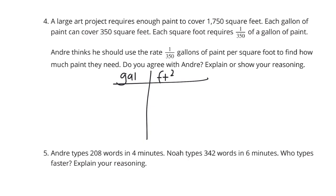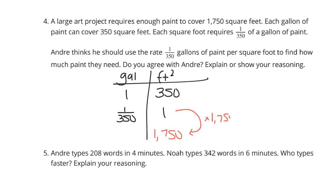Our two unit rates are: one gallon covers 350 square feet, and each square foot requires 1/350th of a gallon. We're trying to get to 1,750 square feet. Using the unit rate given — since we're given square feet — you'd take 1 and multiply by 1,750, and take the 1/350th and multiply by 1,750, to get a solution of 5 gallons. So you could agree with Andre.